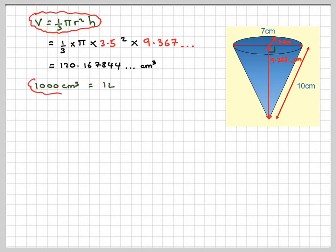Now, we're asked to give the answer in liters. So 1,000 centimeters cubed is equal to 1 liter. So if we divide this by 1,000, we're going to get that the volume is going to be 0.120 liters to 3 significant figures.